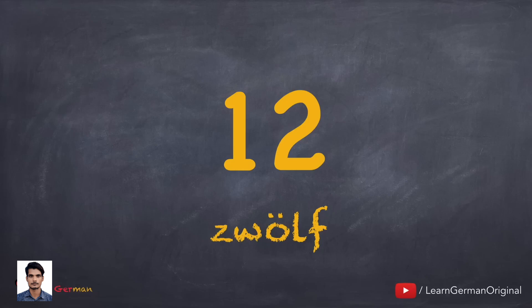Letters with umlaut — in this case O with umlaut — have no equivalent in English. You will be picking up the pronunciation once you learn more words.